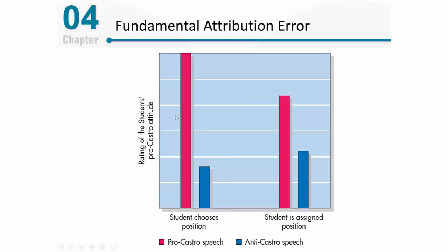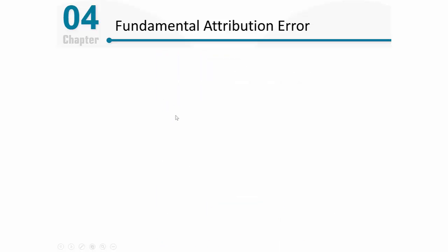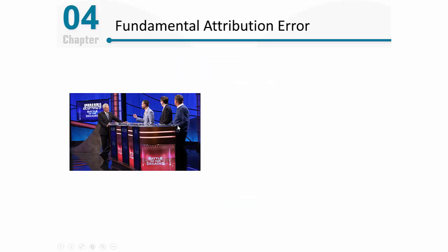Here's another example of the fundamental attribution error at work. This research scenario is very similar to Jeopardy. Alex Trebek is the host — he knows all the questions and all the answers ahead of time. So if we were trying to determine how smart Alex is compared to the contestants, we would need to realize Alex is at a huge advantage. He knows all the information ahead of time, while the contestants simply need to respond to the questions he asks.